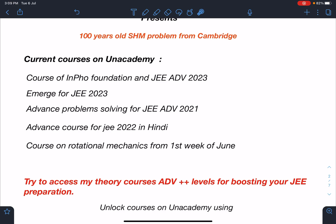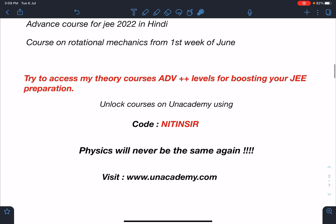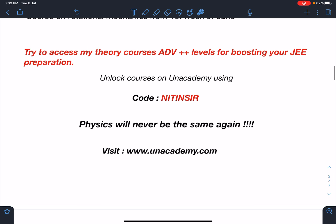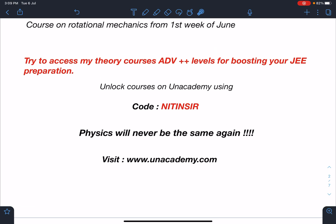Advanced problem solving course for JEE Advanced 2021 in two phases we have covered so far, and the third phase will be starting around 15th of July. Advanced course for J22 in Hindi is currently going on, we are doing current electricity and the next topic will be magnetism. Course on rotational mechanics is already going on, we are midway in this. You can access my last year's theory courses which are of advanced plus plus level for boosting your JEE preparation. You can unlock these courses on Unacademy using my code Nitin sir.